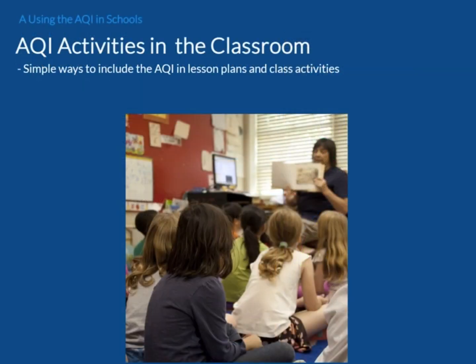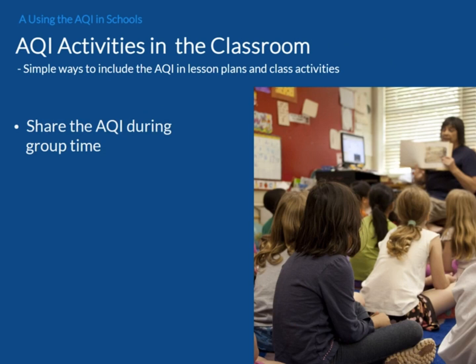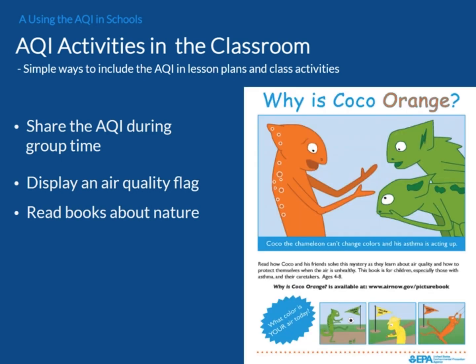Here, we provide some simple ways to include the AQI in your lesson plans and class activities. The AQI is simple enough for all children to understand. You can share the AQI with children during group times and let them make AQI color flags for display in the classroom. The different flag colors displayed daily would let everyone know how clean the outdoor air is. You can also read books about nature or climate. To help teach about air quality and specifically the AQI, EPA developed a children's book called Why is Cocoa Orange?